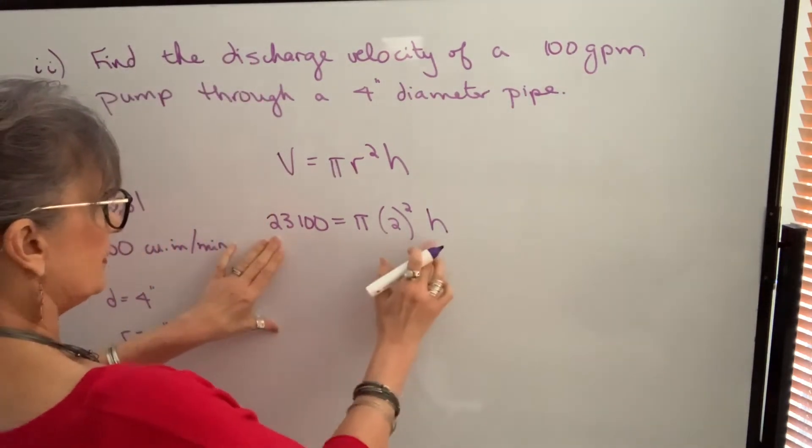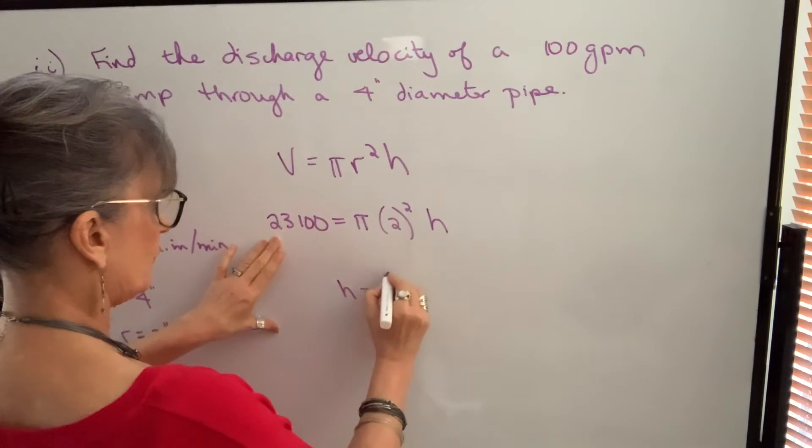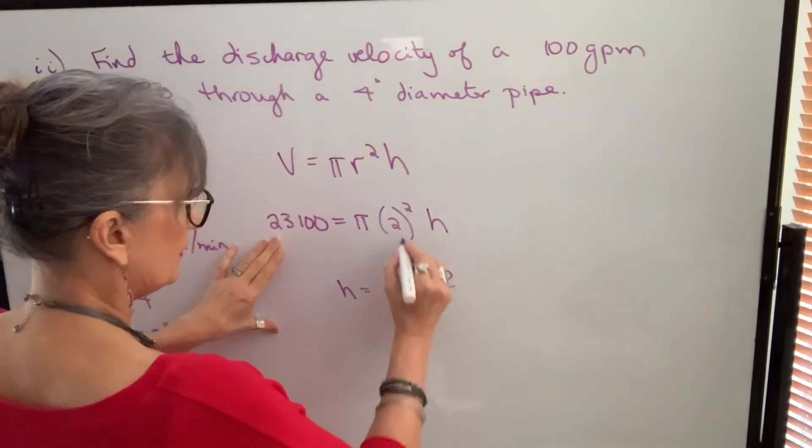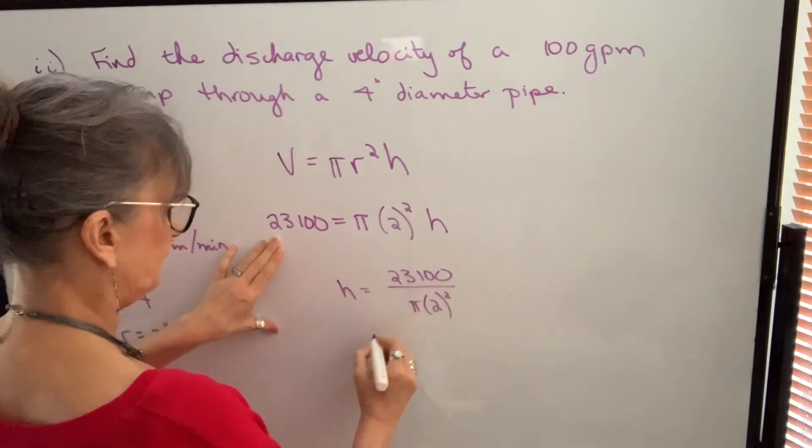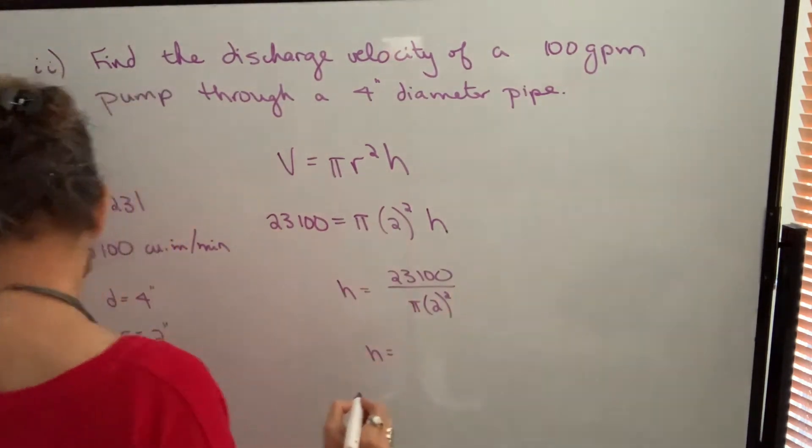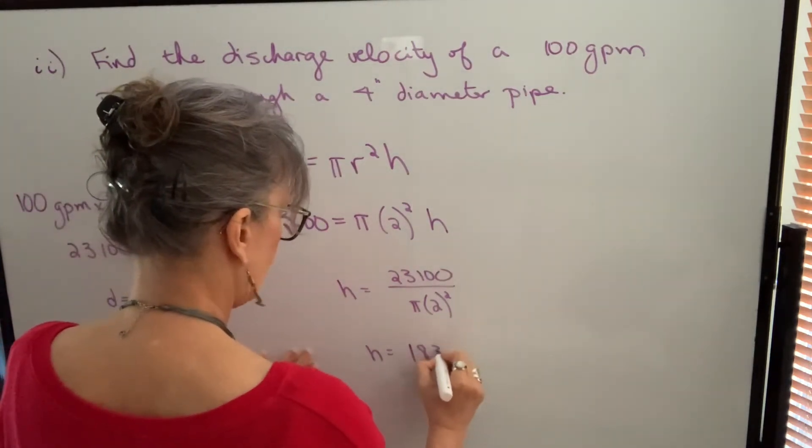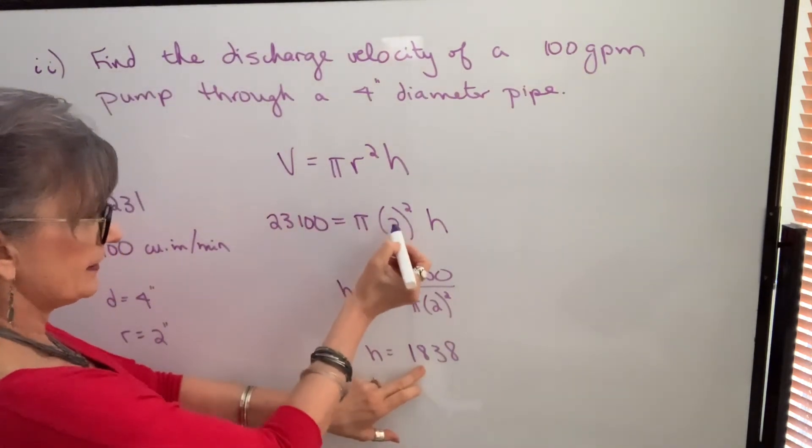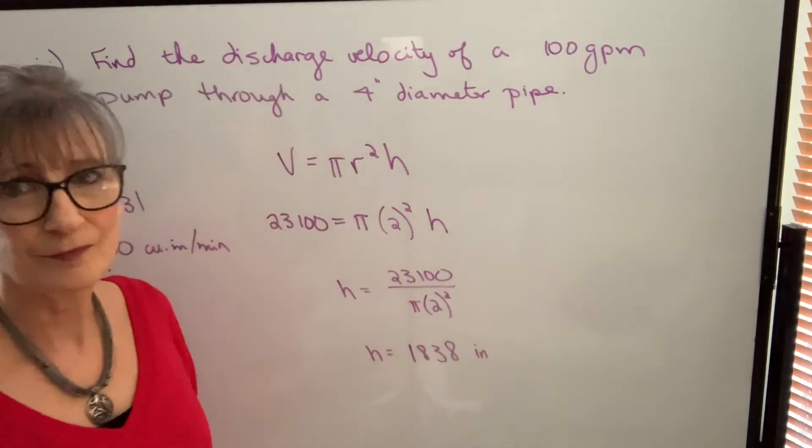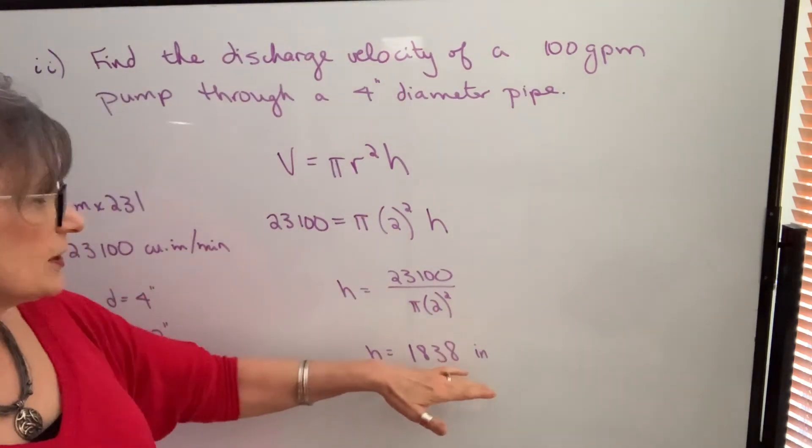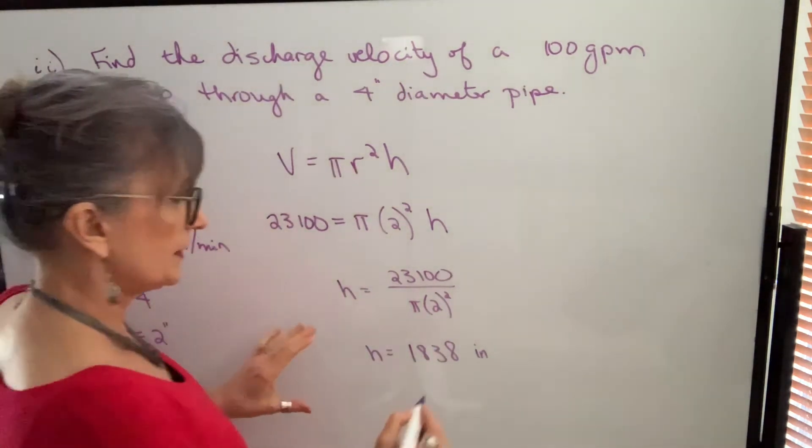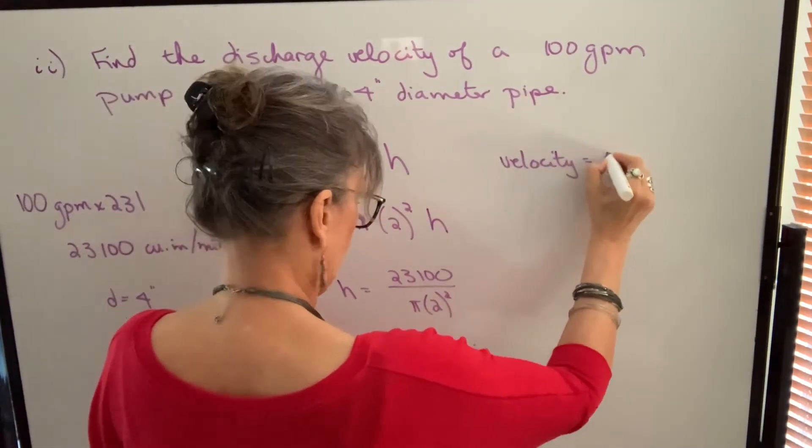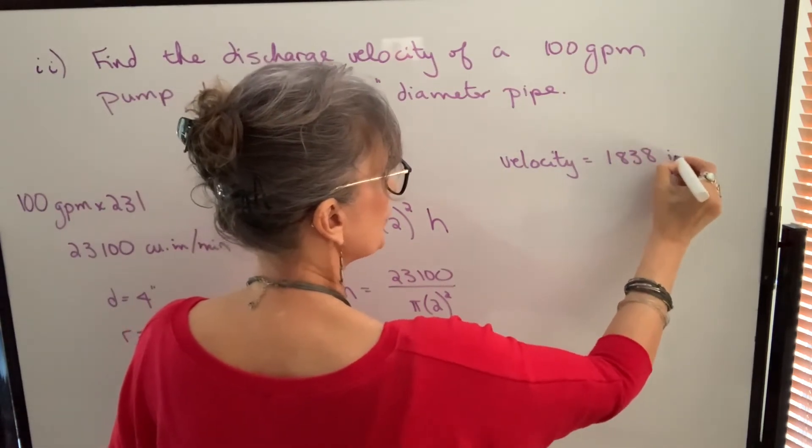So that's what we're going to find. We're going to isolate height by taking 23,100 and dividing by whatever pi times 2 squared is equal to. And we get 1,838. Because this is cubic inches and our radius is in inches, this is in inches. And we know it's inches per minute because this is gallons per minute.